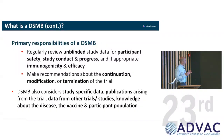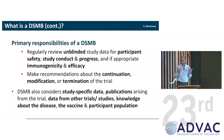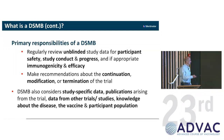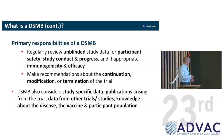The primary responsibilities of a DSMB are to regularly review unblinded data — some DSMBs are semi-blinded but can unblind at any time, though I prefer to be unblinded throughout. They look at participant safety data, study conduct and progress, and where appropriate, immunogenicity and efficacy, though not all trials measure these. They make recommendations about continuation, modification, or termination of a trial, and also consider other study-specific data, publications, data from other concurrent trials that may inform safety decisions, and new knowledge about the disease, vaccines, and participant populations.